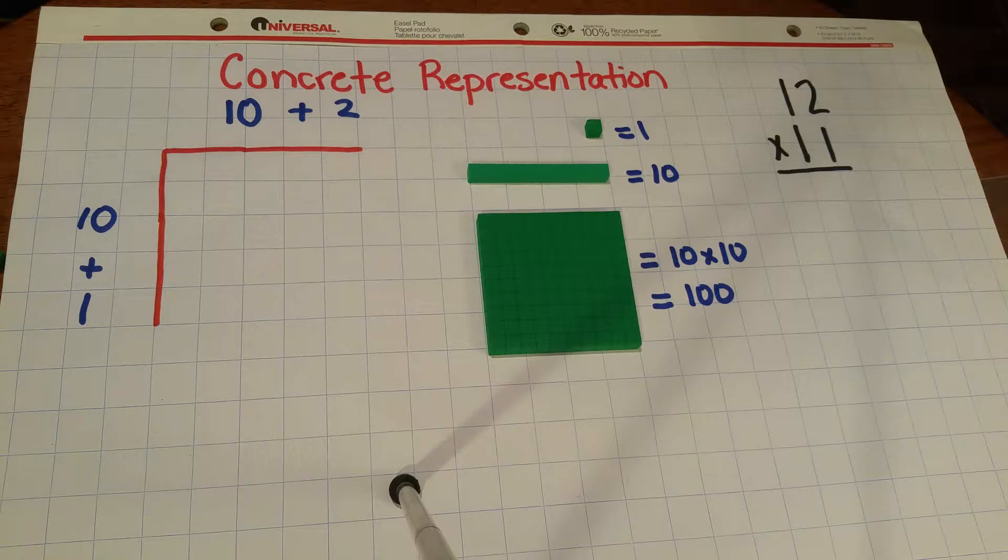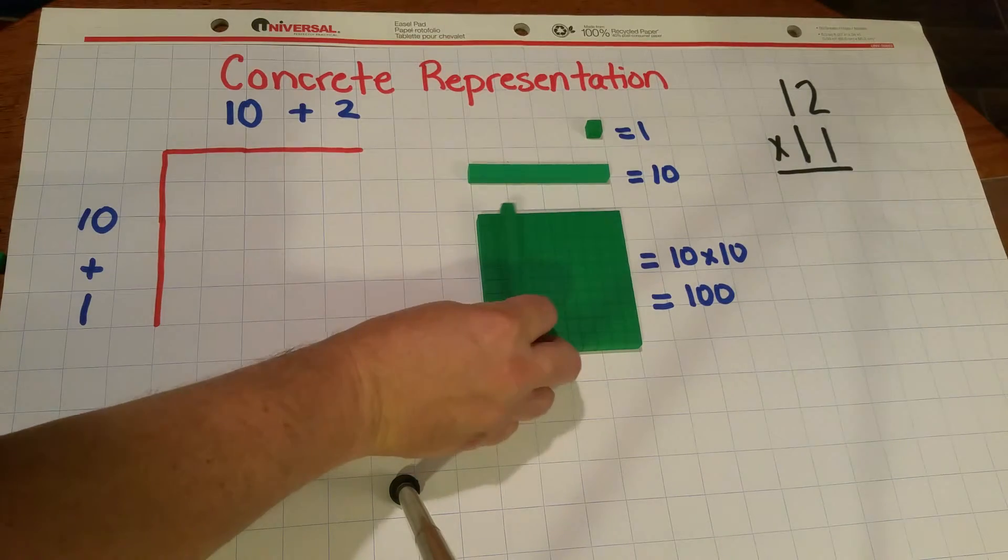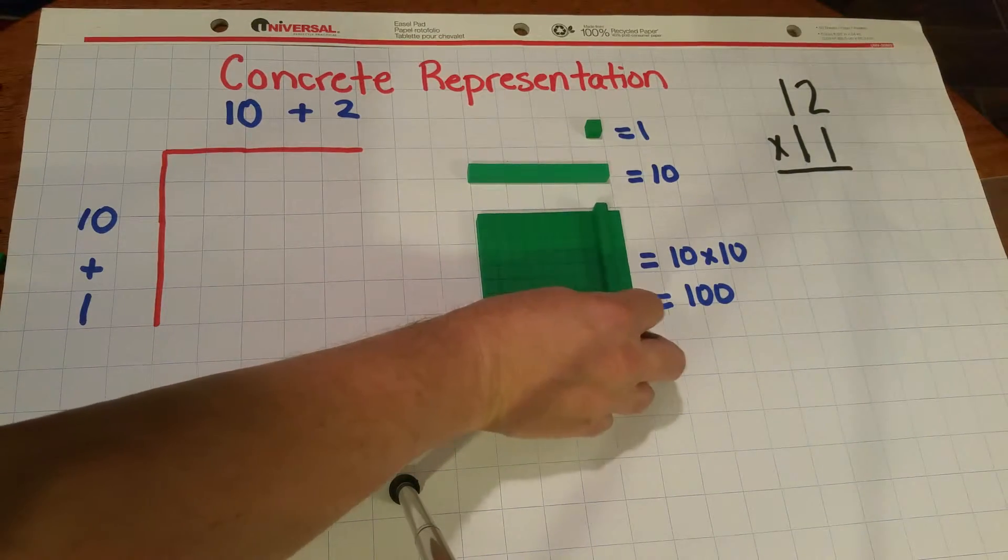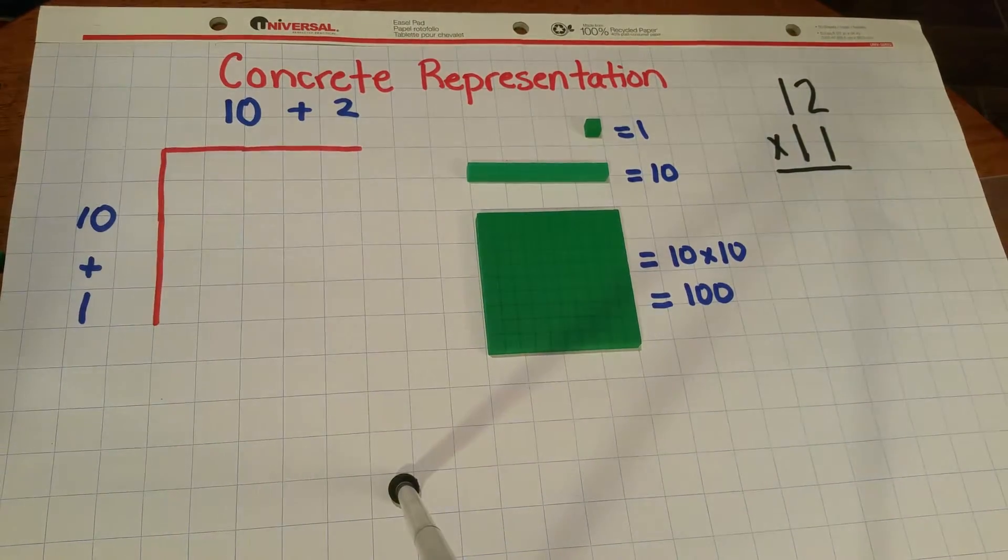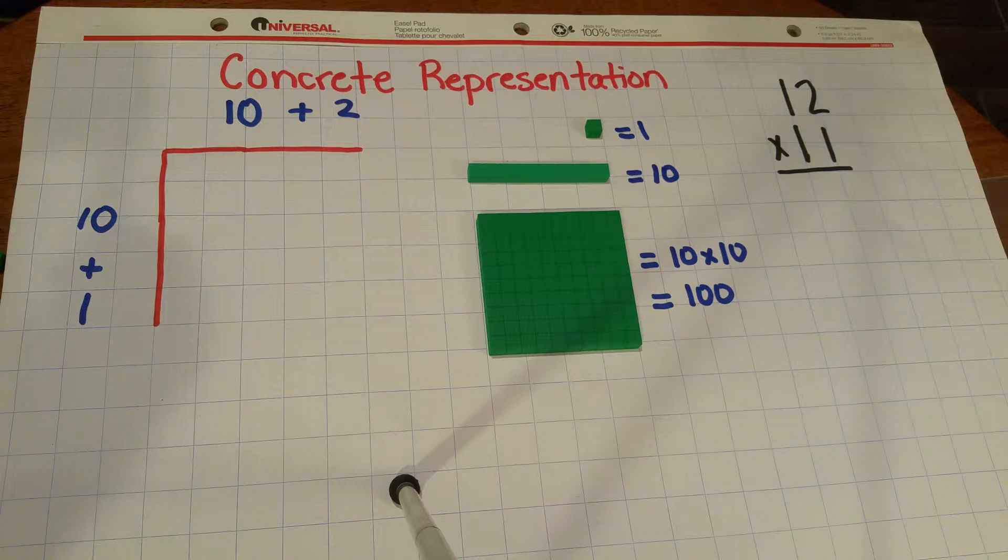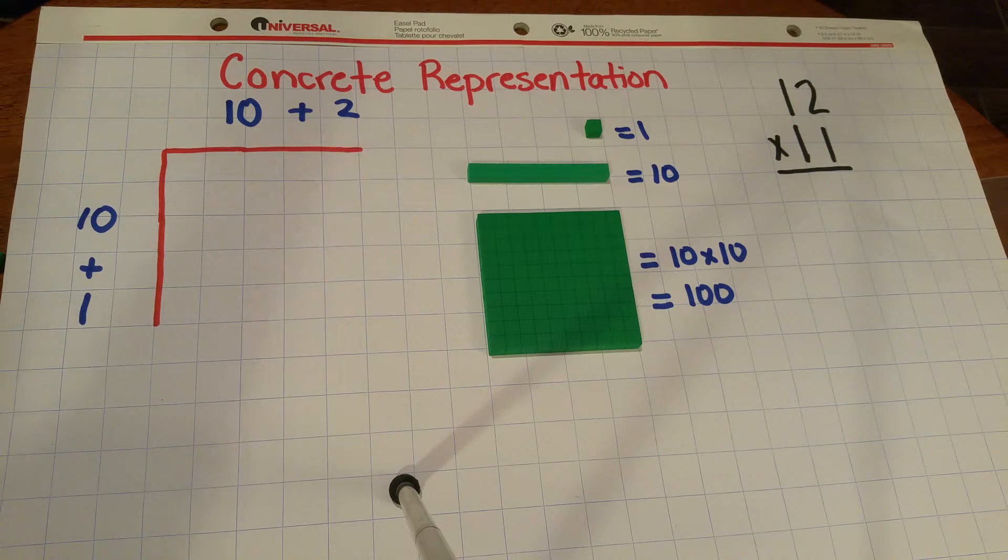Students can verify the value of the 100 block by skip counting: 10, 20, 30, and so forth, 80, 90, 100. Students in this program have been trained to skip count by tens from first and second grade.